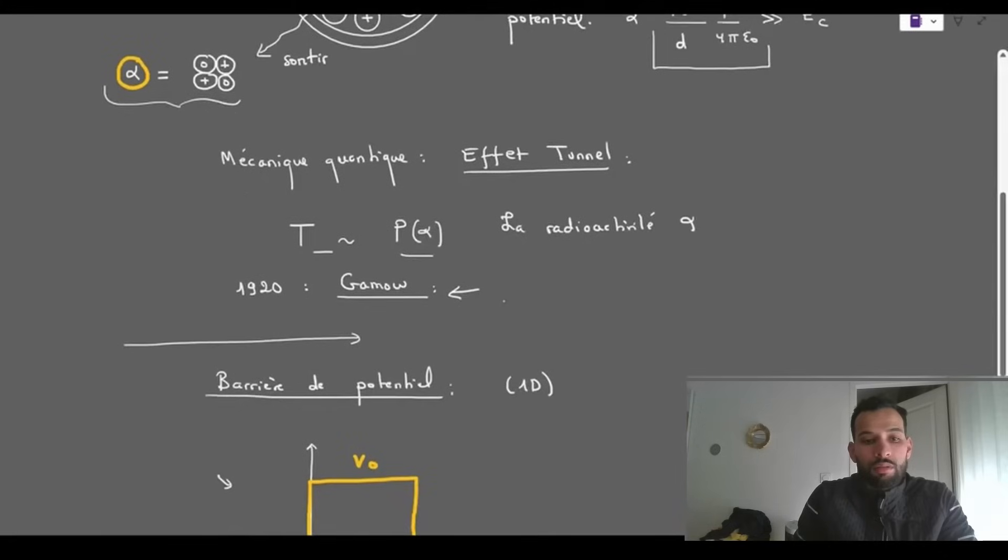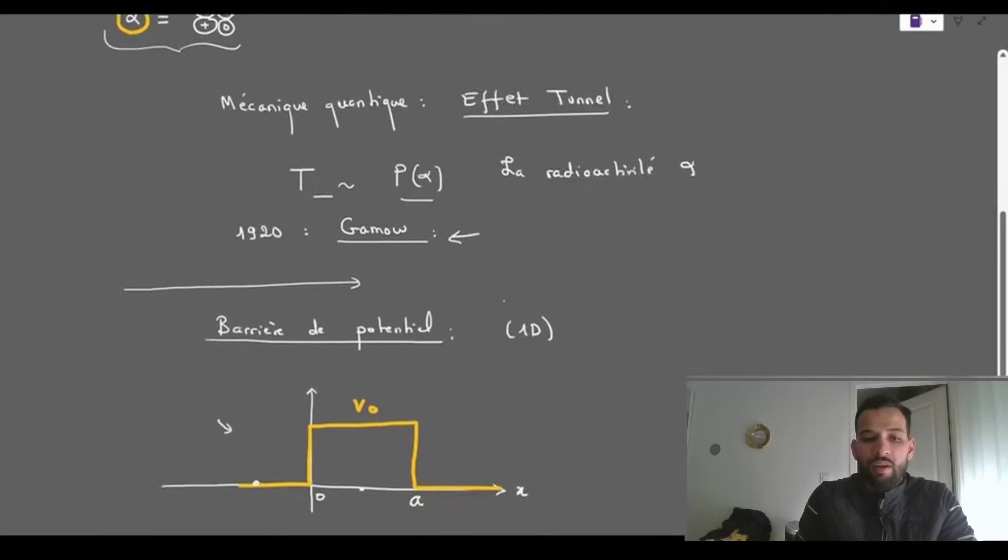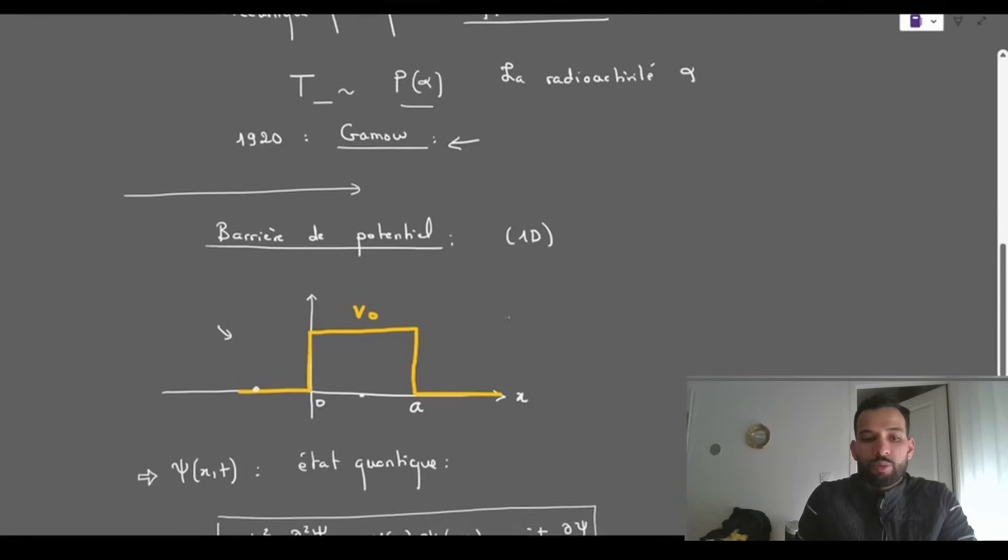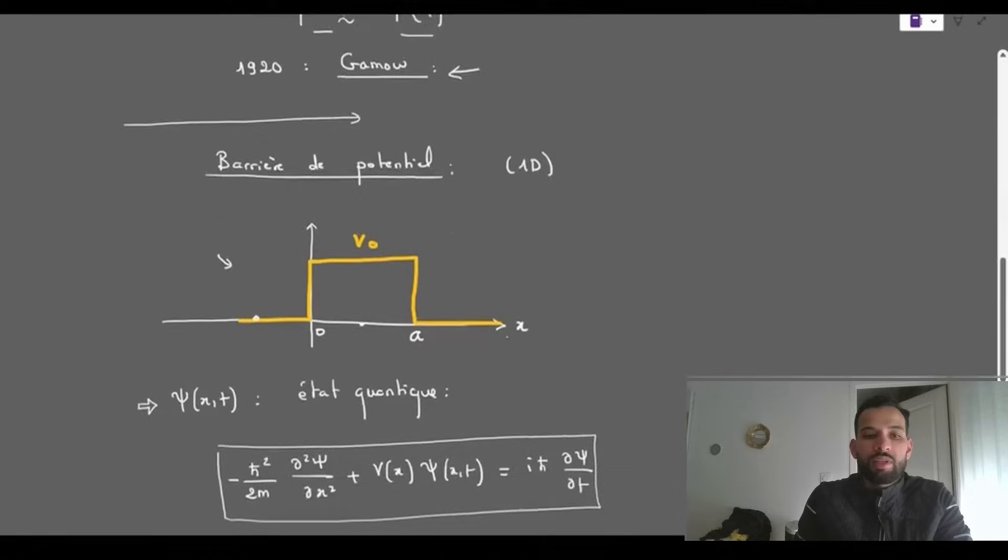First, we will recall what the tunnel effect is through the example of the potential barrier. We will calculate the reflection and transmission coefficients from the Schrödinger equation.